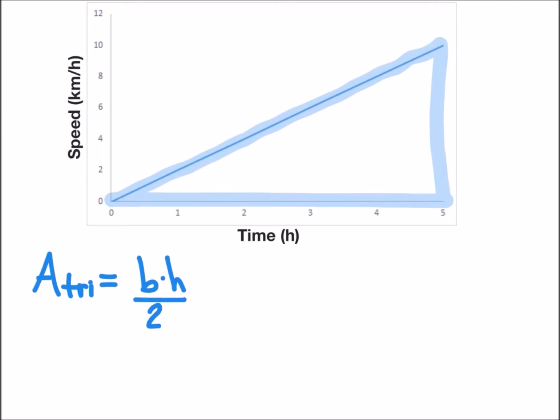We're going to find the area of a triangle, and to do that we're going to use the equation base times height divided by two. Let's look at what the base is going to be, and that will be a measure of five hours, so we can put that into our formula.